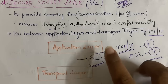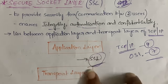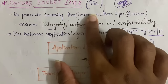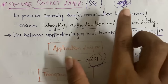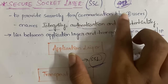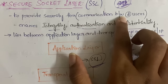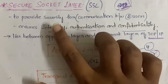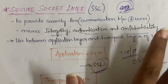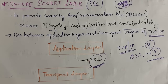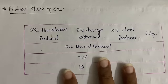So SSL - Secure Socket Layer - is a protocol which lies between the application layer and transport layer. What it does is it is mainly for providing security between two users when they are communicating with each other. It ensures integrity, authentication, and confidentiality of the message. Now let us see what are the different protocols we have in SSL.